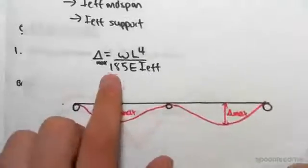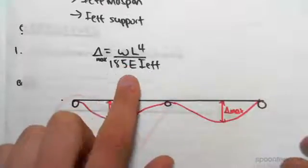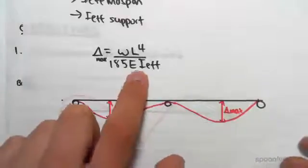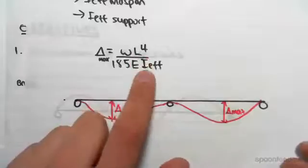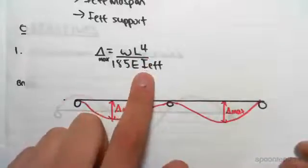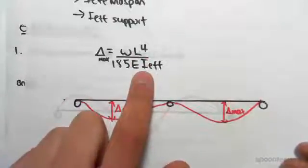be given as wL to the power of 4 over 185EI. We're going to talk about what this IE effective is, but what I want you to realize is that the deflection is based on the I-value. So the I-value is going to be very important in working out the deflection.